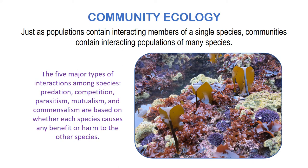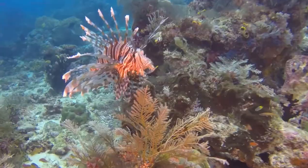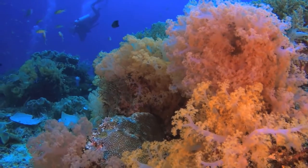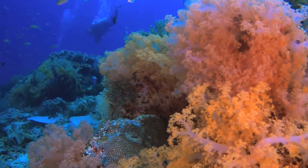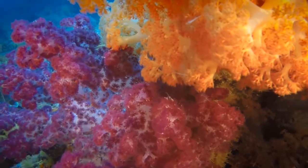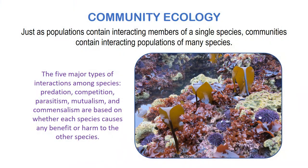Let's proceed to community ecology. Just as populations contain interacting members of a single species, communities contain interacting populations of many species. The five major types of interactions among species are predation, competition, parasitism, mutualism, and commensalism — all based on whether each species causes any benefit or harm to the other.